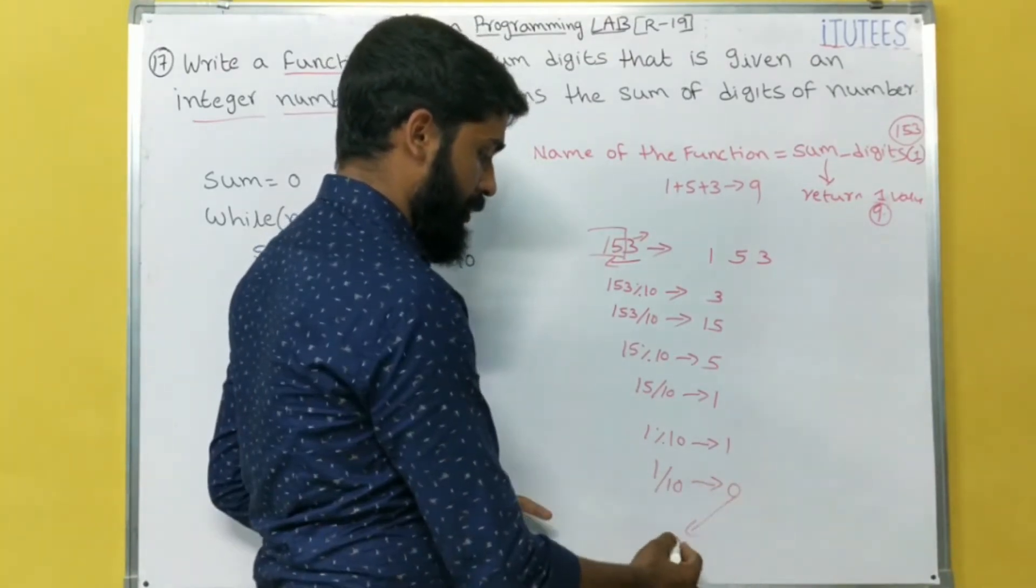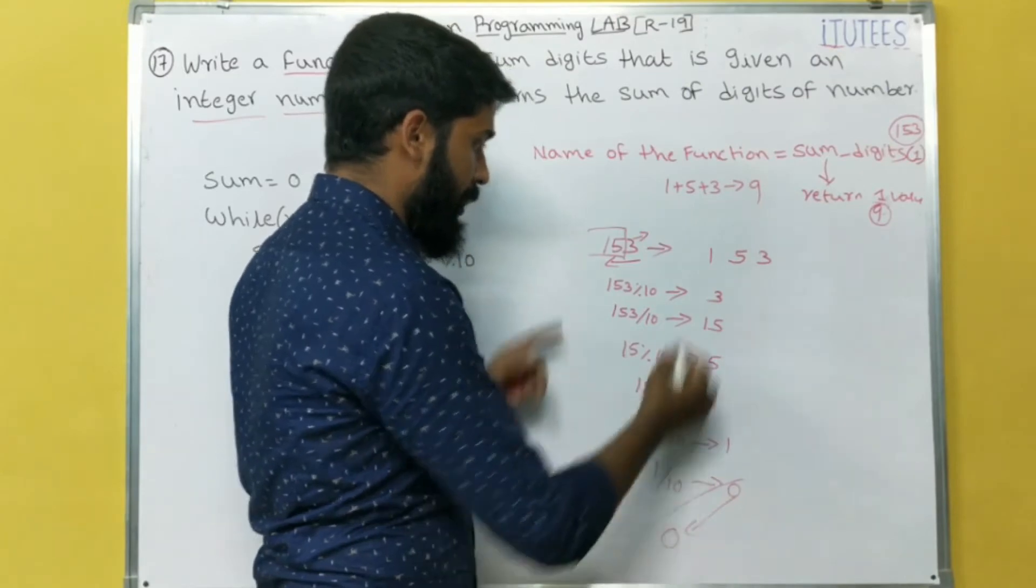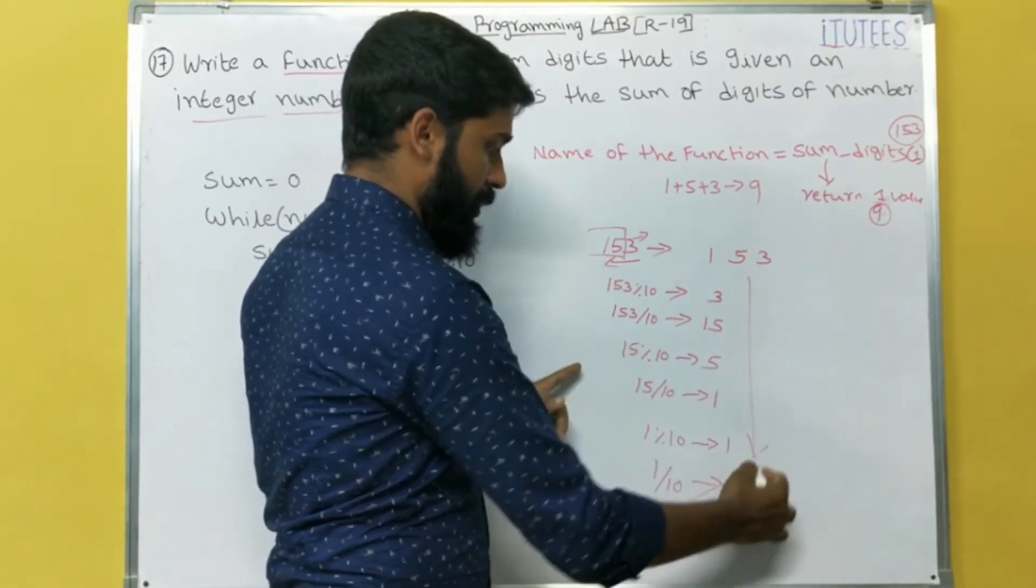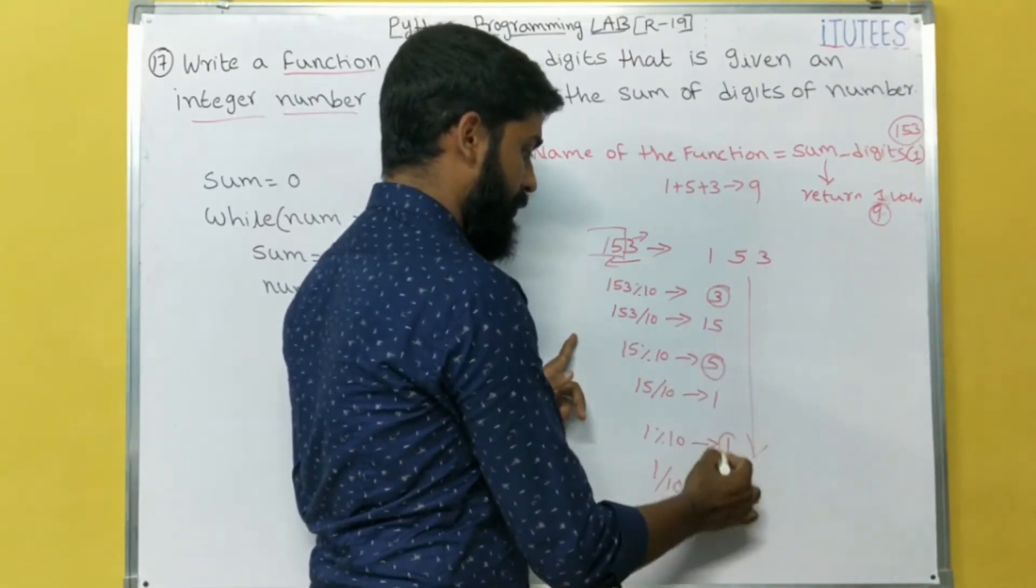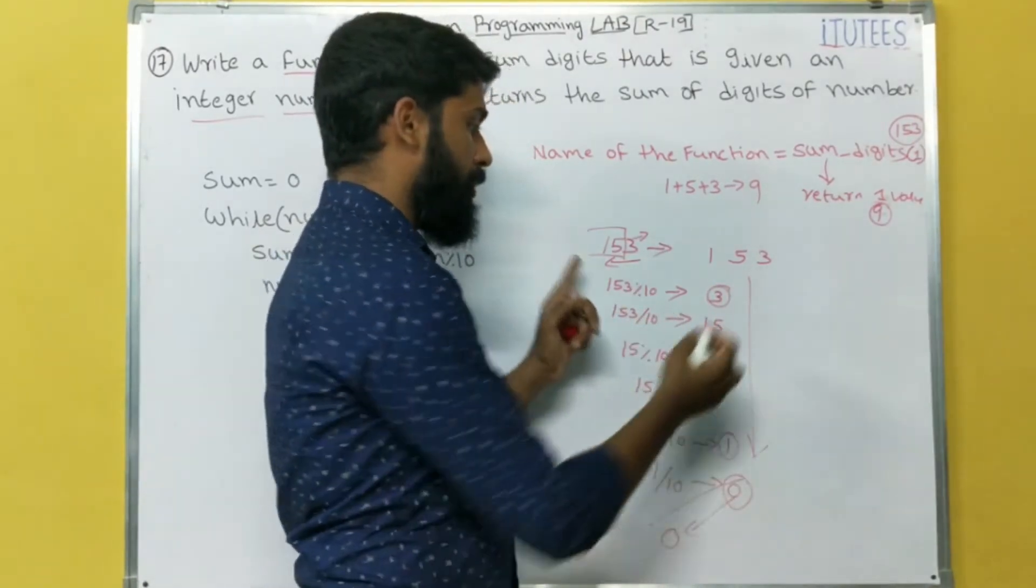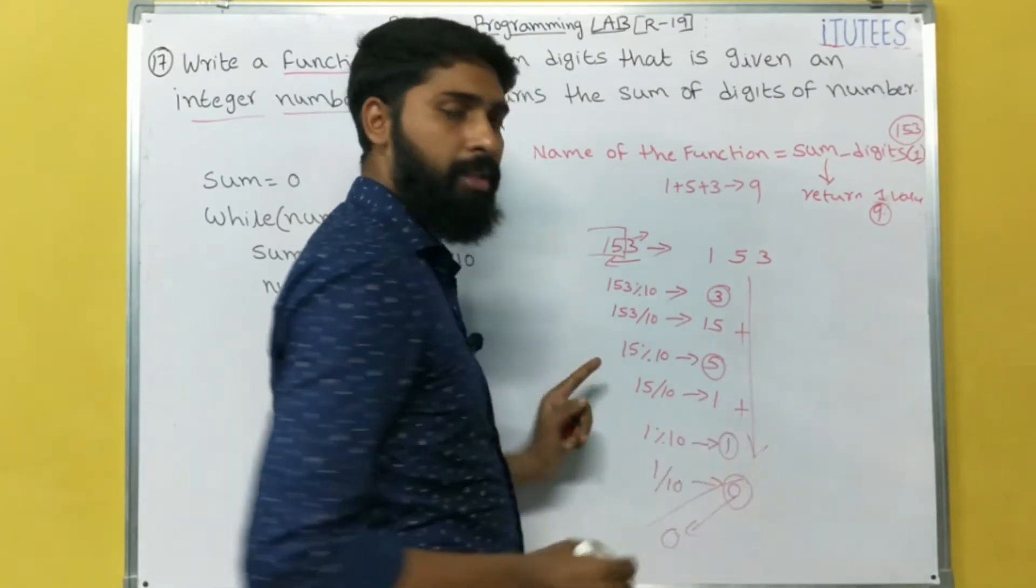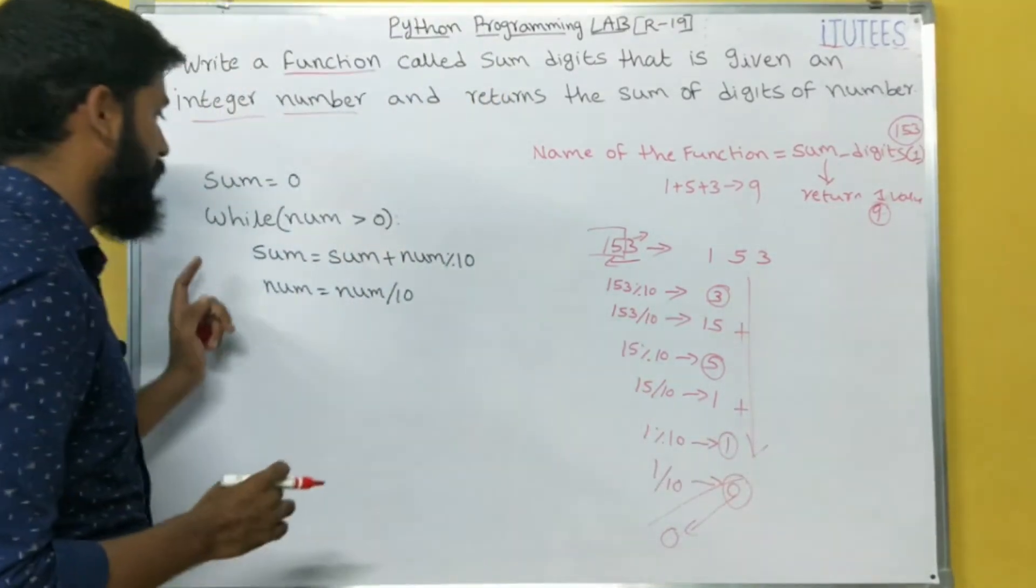Now, we are taking 0. That means, we can do this process until we get 0. Here, 3, 5, 1. These are the digits. Now, we are going to add these digits. That's it. That is the logic.